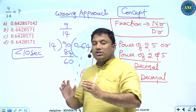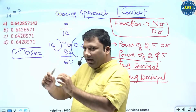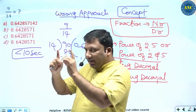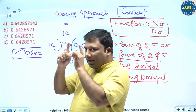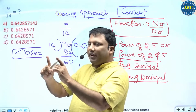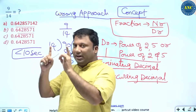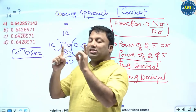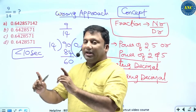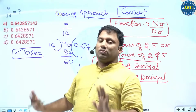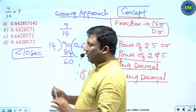So the first concept: in this question, directly go to the denominator. Check if it is a power of 2, a power of 5, or a combination of 2 and 5. If it is, the answer will be a terminating decimal. Anything other than that, it will be a recurring decimal.